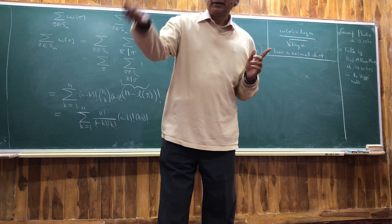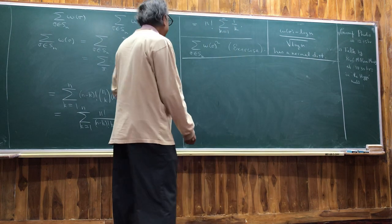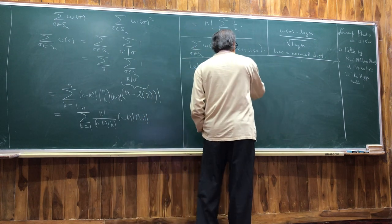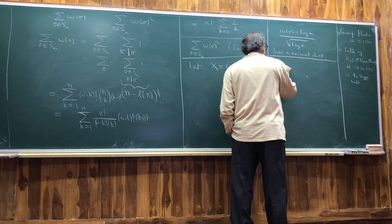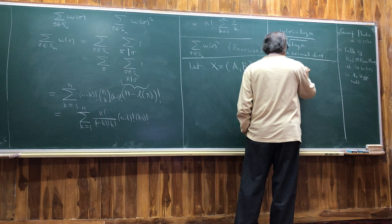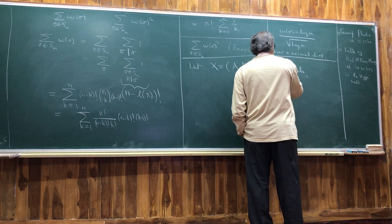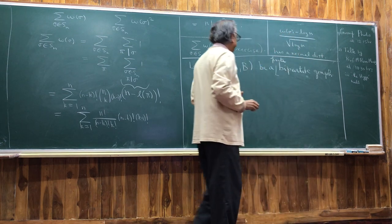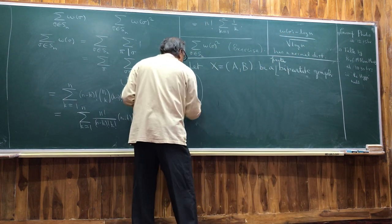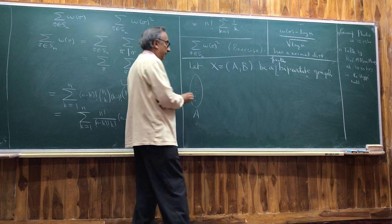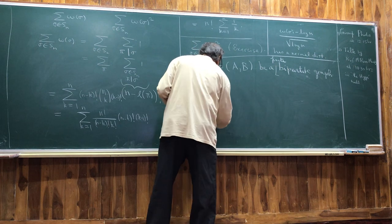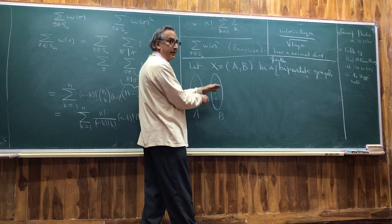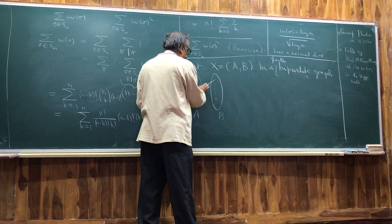I'm going to present to you one of the simplest presentations of sieve theory that I can think of — this is even easier than Eratosthenes' sieve. Not only is it easier, but it'll give you better results than Eratosthenes' sieve. So let X = (A, B) be a finite bipartite graph.